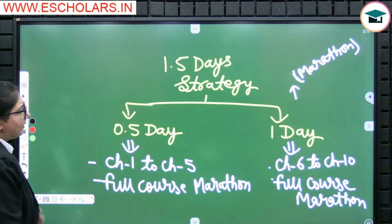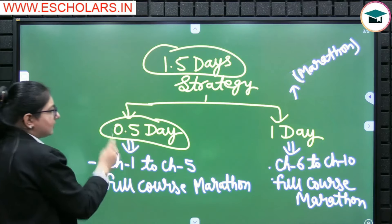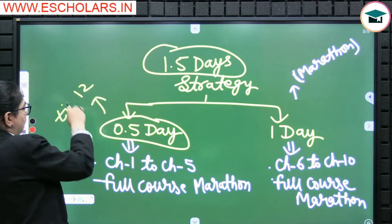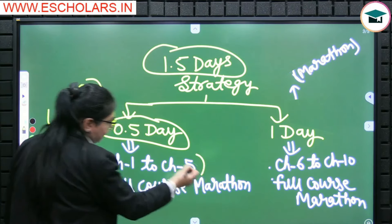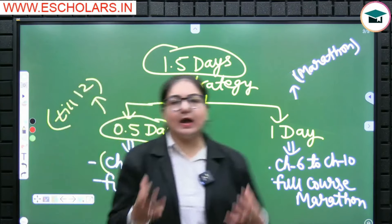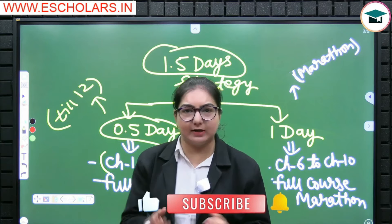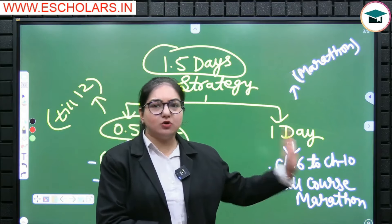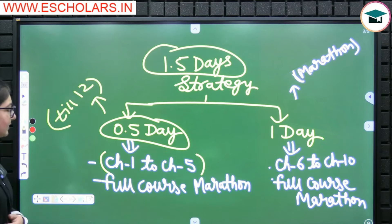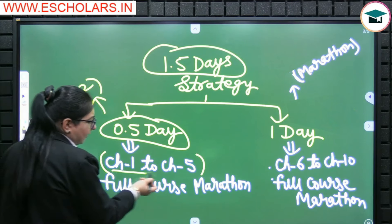So students, when you have 1.5 days, I have divided this into half days. Today is the 12th, meaning your time until 12 o'clock today. I will revise with you today from chapter 1 to chapter 5. Chapter 1 to chapter 5 you have to cover today, but chapter 6 to chapter 10 is a bit more challenging, so chapter 6 to chapter 10 we will do with a fresh mind tomorrow. Today you have to prepare your first 5 chapters.